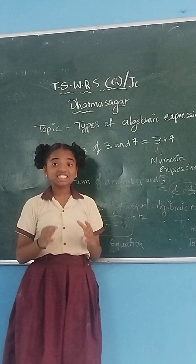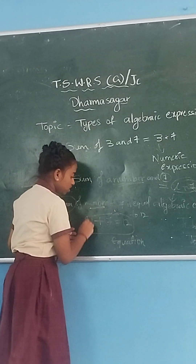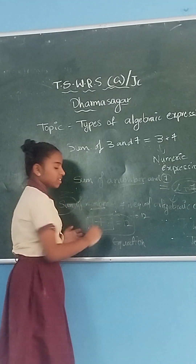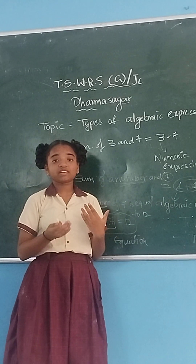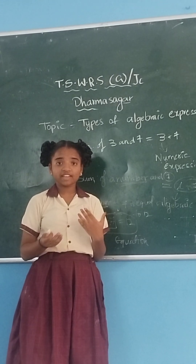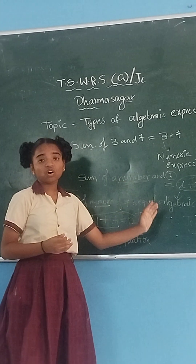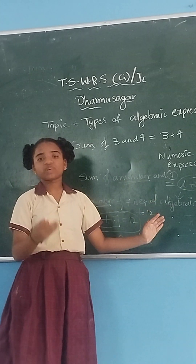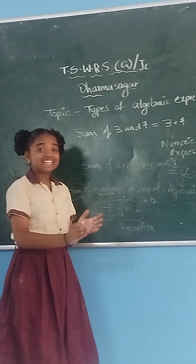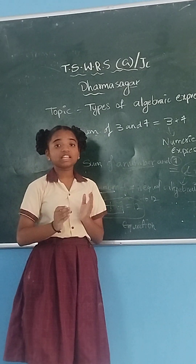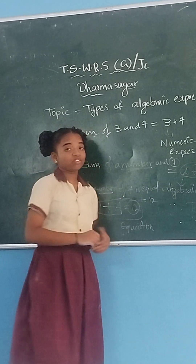An equation is something where the LHS side equals the RHS side. LHS means left-hand side and RHS means right-hand side. So here, x plus 7 is exactly equal to 12.